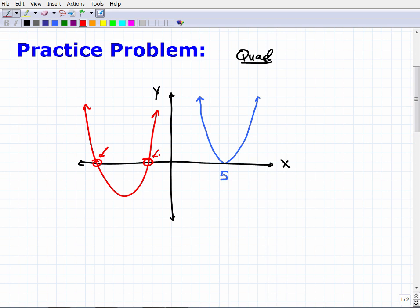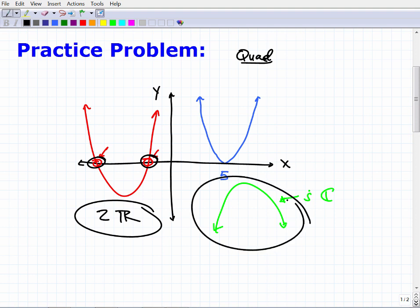If I have a quadratic equation like this, some sort of parabola, it's not crossing the x-axis at all. This means that this particular quadratic equation has imaginary or complex roots. Here we would have two real number roots. This does not cross the x-axis, so it has two imaginary roots.